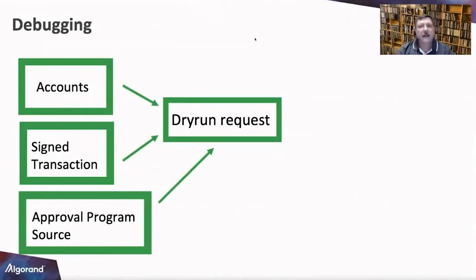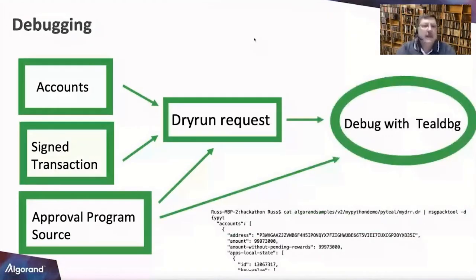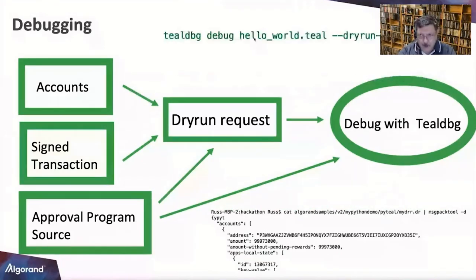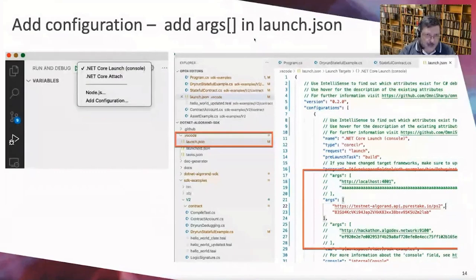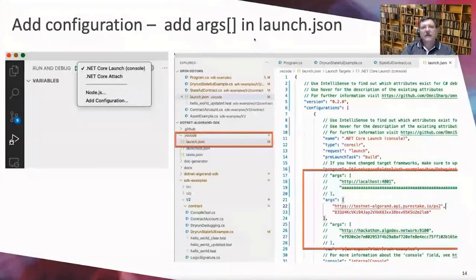There's a way to add your arguments for the token and URL in the launch.json that works nicely with the C# SDK. The demo involves debugging and using a dry run request for smart contracts — it bundles accounts, signed transactions, and approval program source into a dry run request. You can then use the Teal debugger. In VS Code, you add configuration under the debug icon, and add a .NET Core launch.